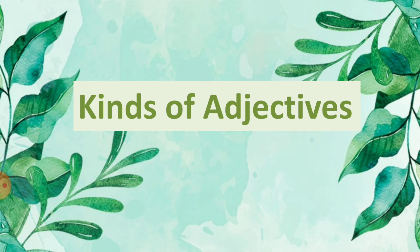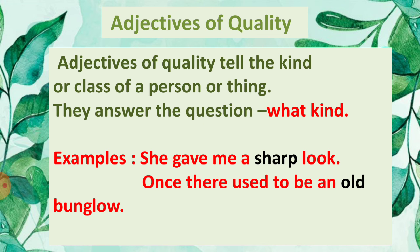Today we are going to see the kinds of adjectives. Adjectives of quality tell the kind or class of a person or thing. They answer the question 'what kind?' Adjectives of quality describe the person or tell us about the quality of that person. For example, 'She gave me a sharp look.' What kind of look? Sharp — so 'sharp' is an adjective of quality.